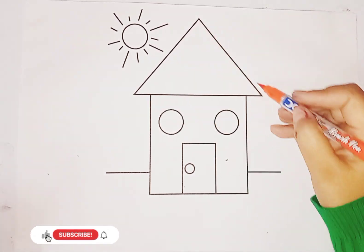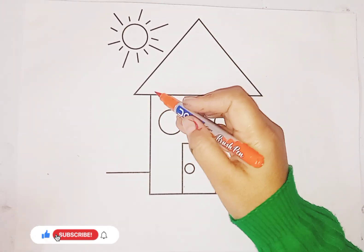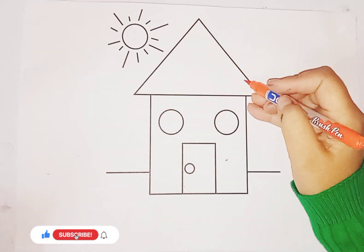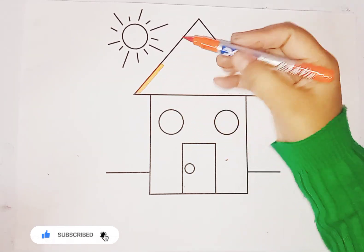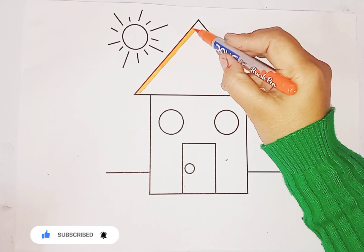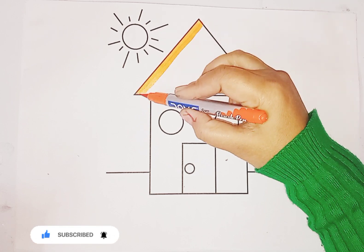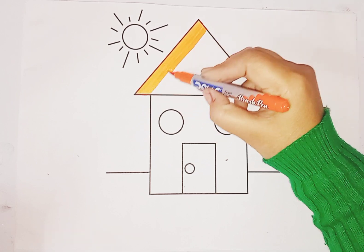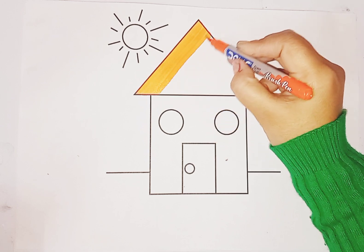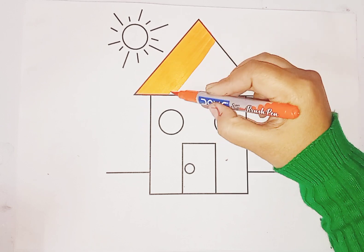So this is a triangle. Which shape is this? This is a triangle. We do orange color in triangle shape. Which shape is this kids? This is a triangle shape.